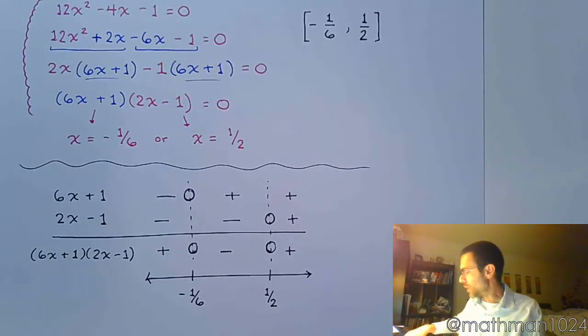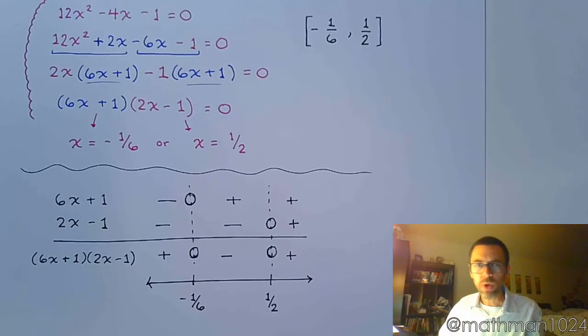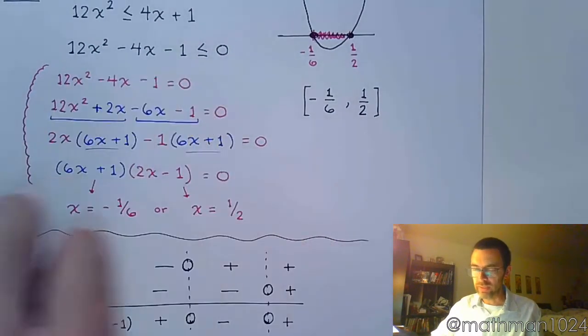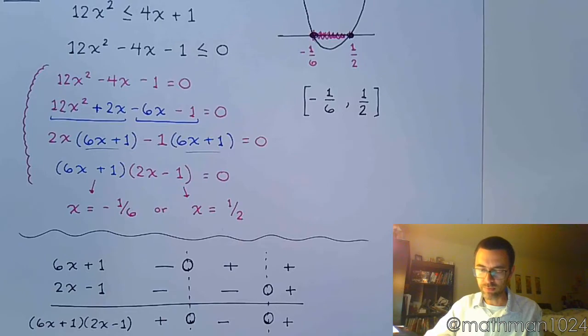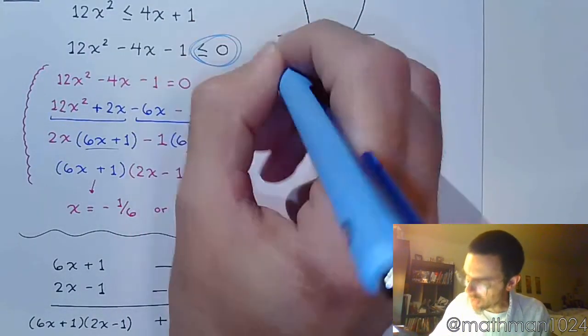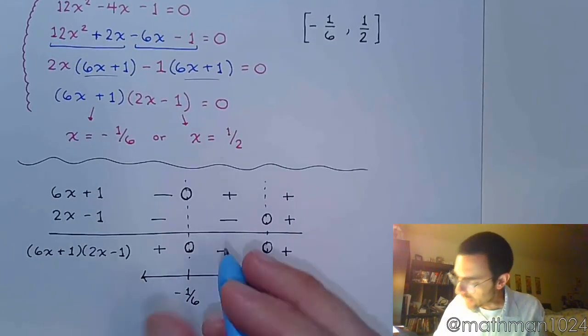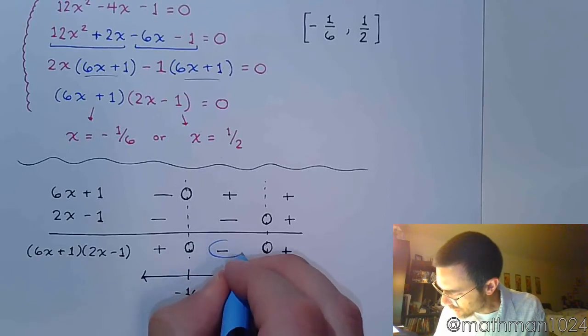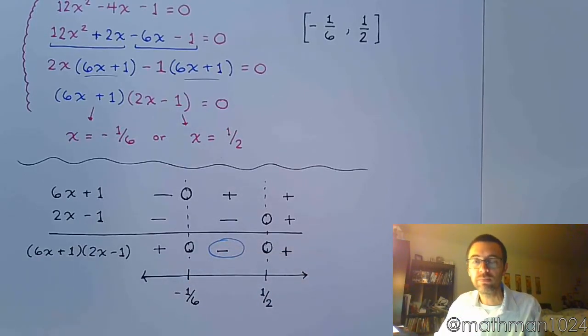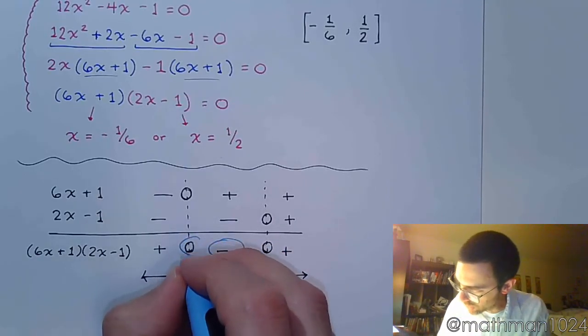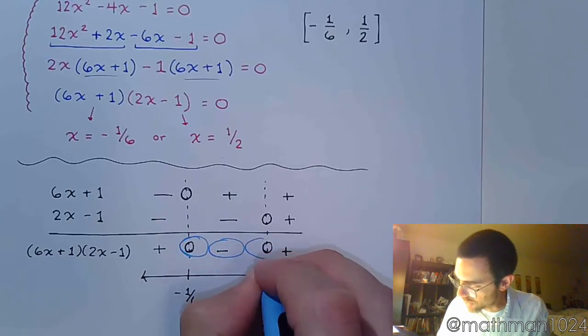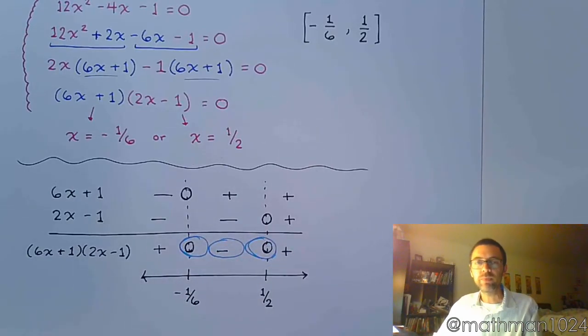For this inequality, we wanted those guys that were less than or equal to 0. So, less than or equal to 0, what does that mean? Well, less than 0 means negative. Equal to 0 means including those places where we can be equal to 0. So, I've colored in all the little pieces that satisfy less than or equal to 0.